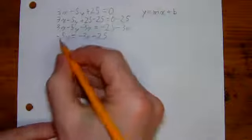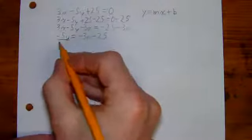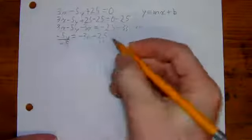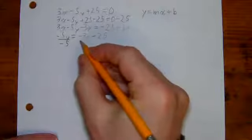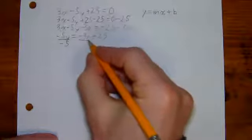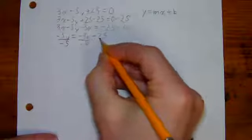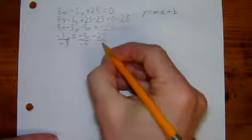So if I just want y here, since it's a multiplication, we can undo it with a division. Negative 5 divided by negative 5 is 1. 1 times y is just going to be y. Of course, I also need to divide everything over here by negative 5.